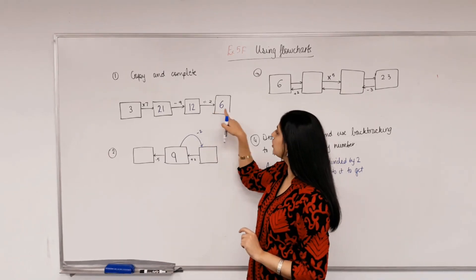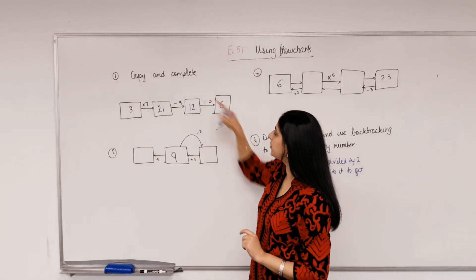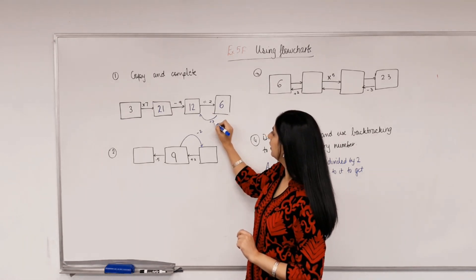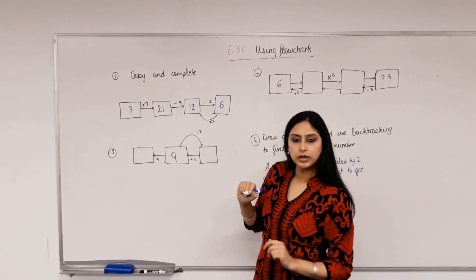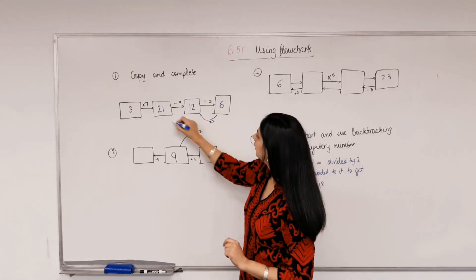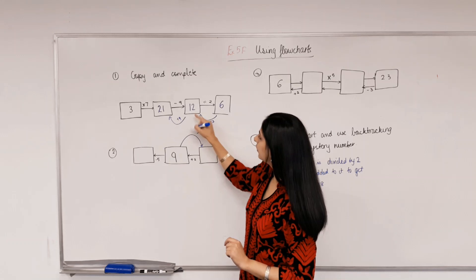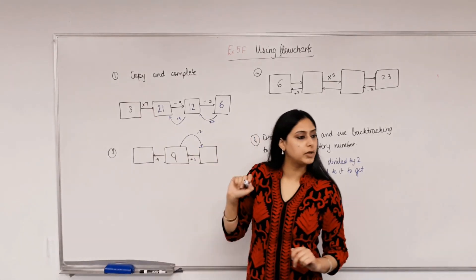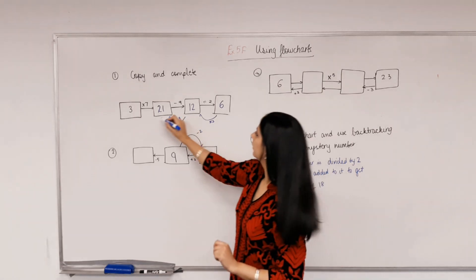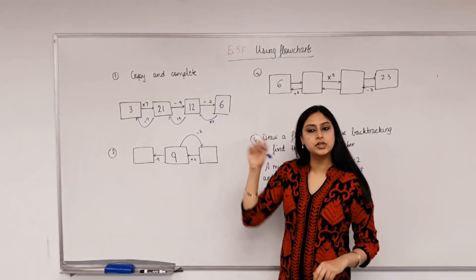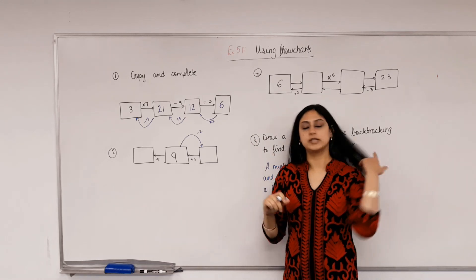So if we have to go from 6 to 12, what's opposite of dividing by 2? Times, multiplied by 2. And is that correct? 6 times 2 is 12. So what's the inverse of taking away 9? Plus 9. 12 plus 9 is 21. And then what's the inverse of timesing by 7? Divide by 7. So now we know how to get the instructions in the opposite direction.